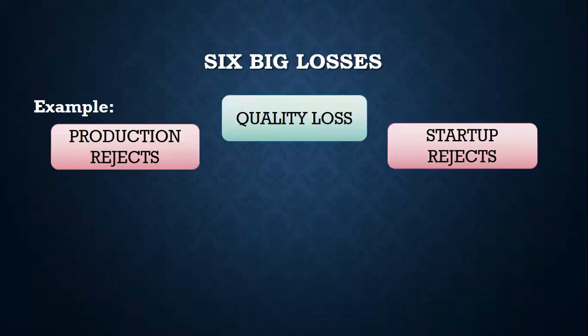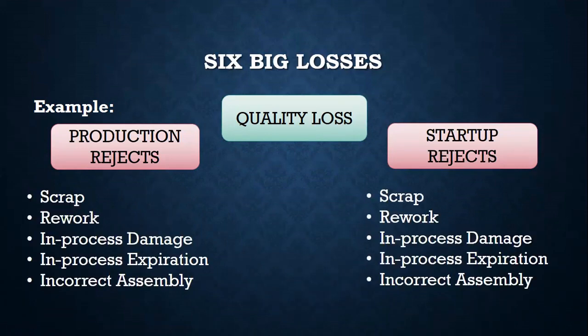Lastly, quality. There are production rejects and startup rejects — just different names for the same rejects based on when they were generated. Major examples of rejects are scrap, rework, in-process damage, expiration, or incorrect assembly. That is all for six big losses.